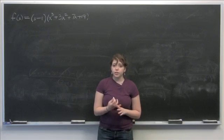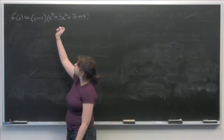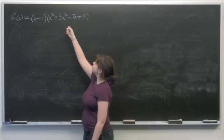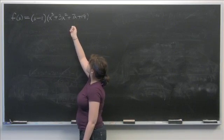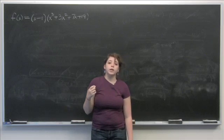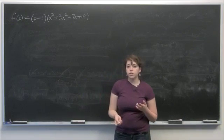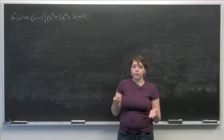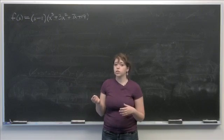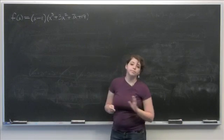We're given the function f(x) = (x - 1)(x³ + 3x² + 7x + 19). We're asked to find the critical points and to find the intervals where the function is decreasing and increasing.